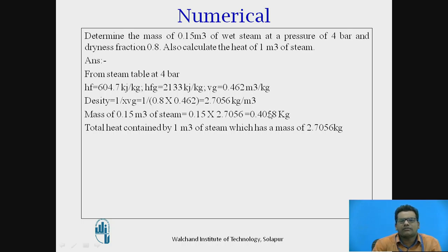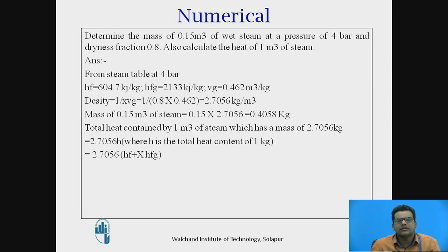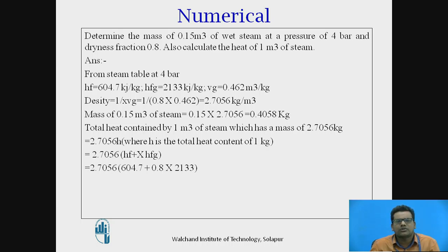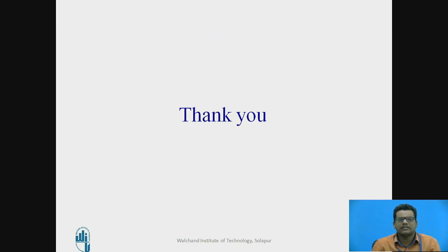Total heat content of 1 m³ of steam — which has a mass of 2.7056 kg — is given by 2.7056 × H, where H is the total heat per kg for wet steam: H = HF + X·HFG. Substituting the values gives a total heat content of 6252.9 kJ for 1 m³ of steam. These are the references. Thank you.